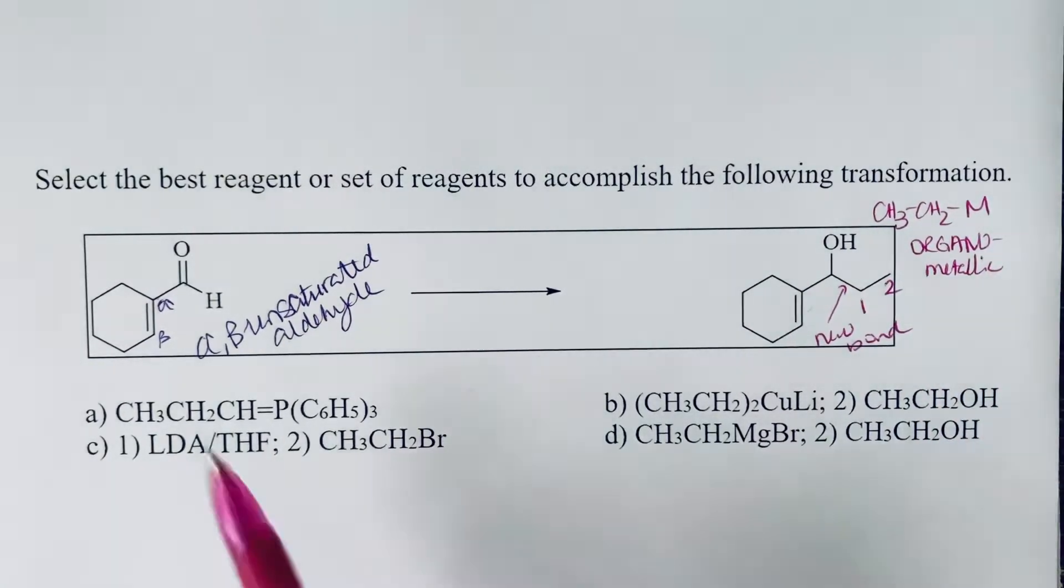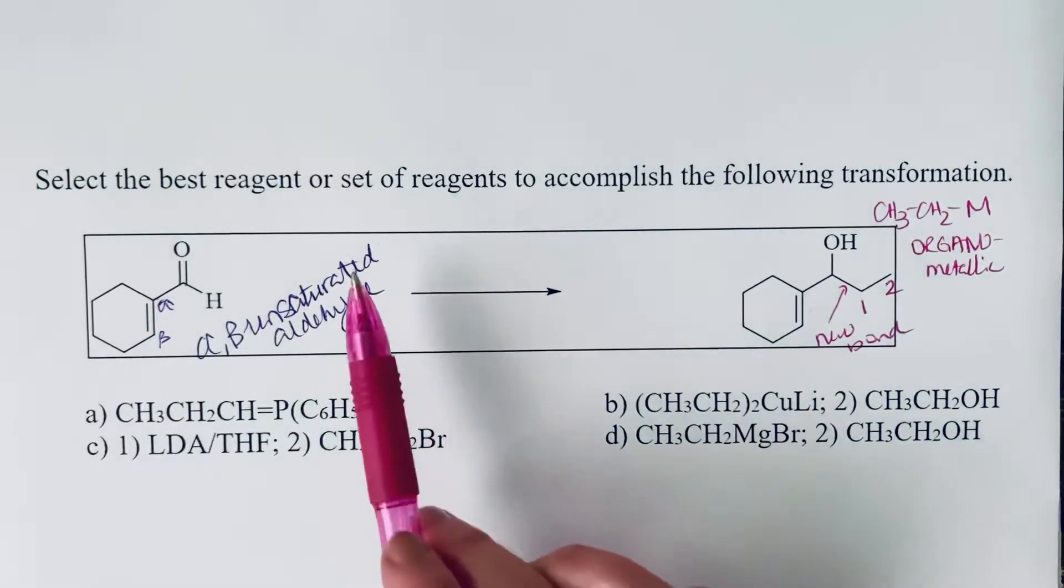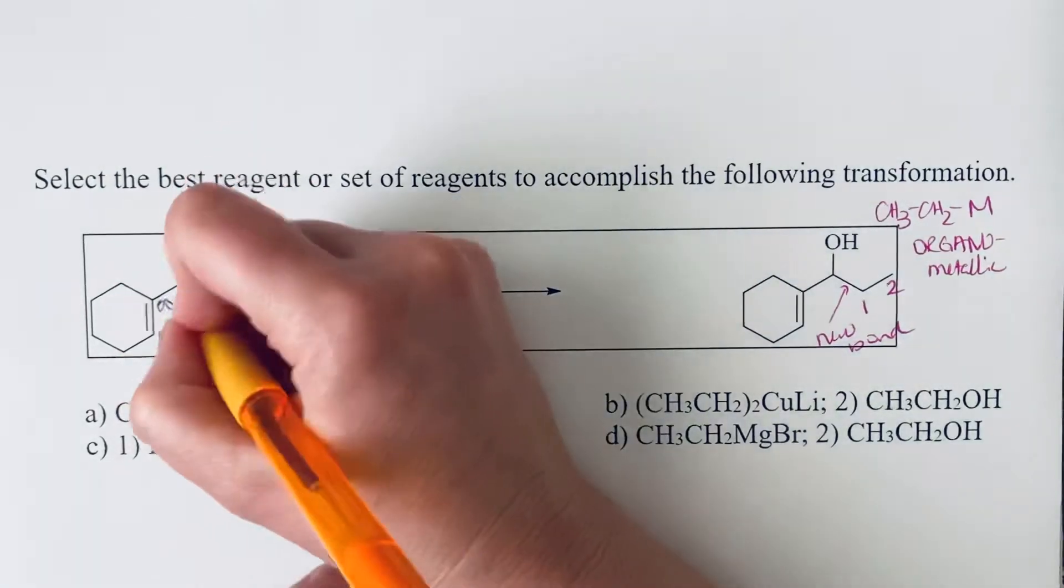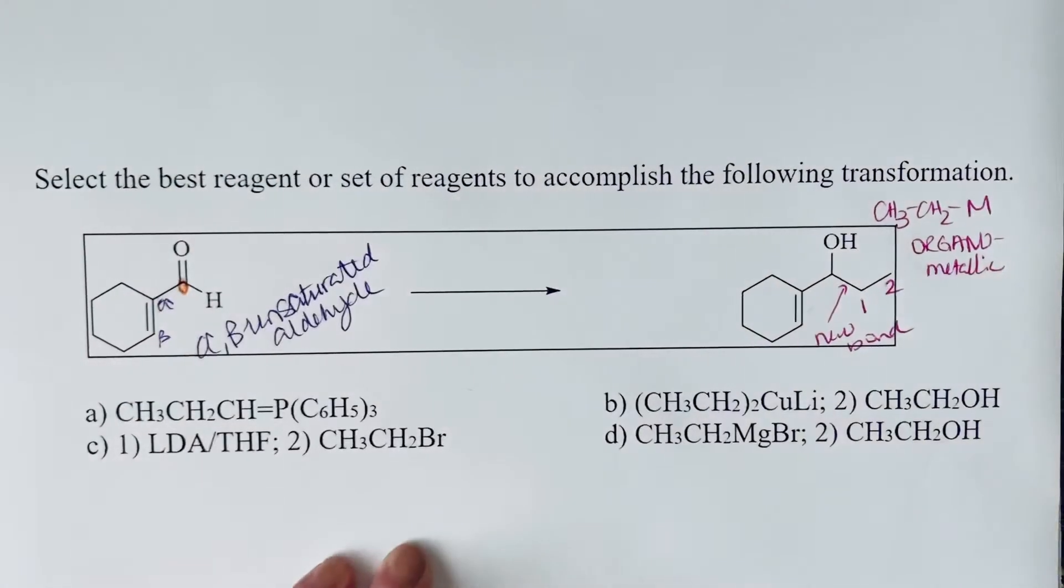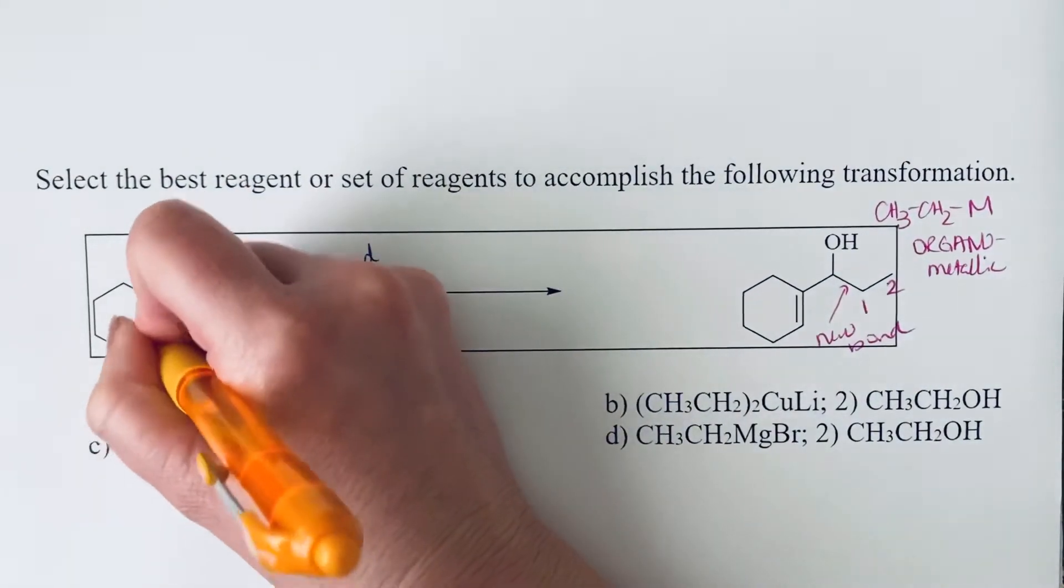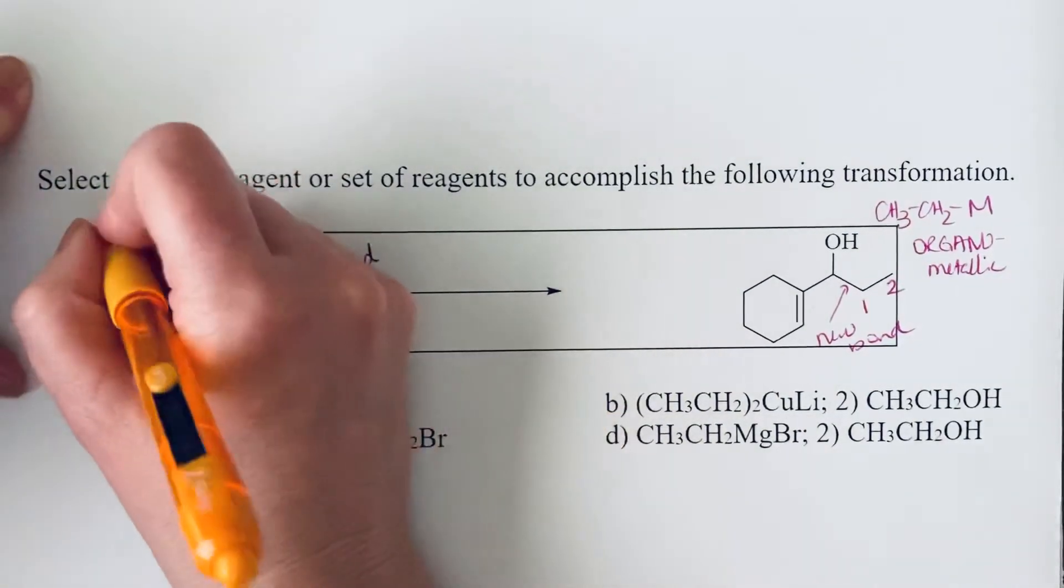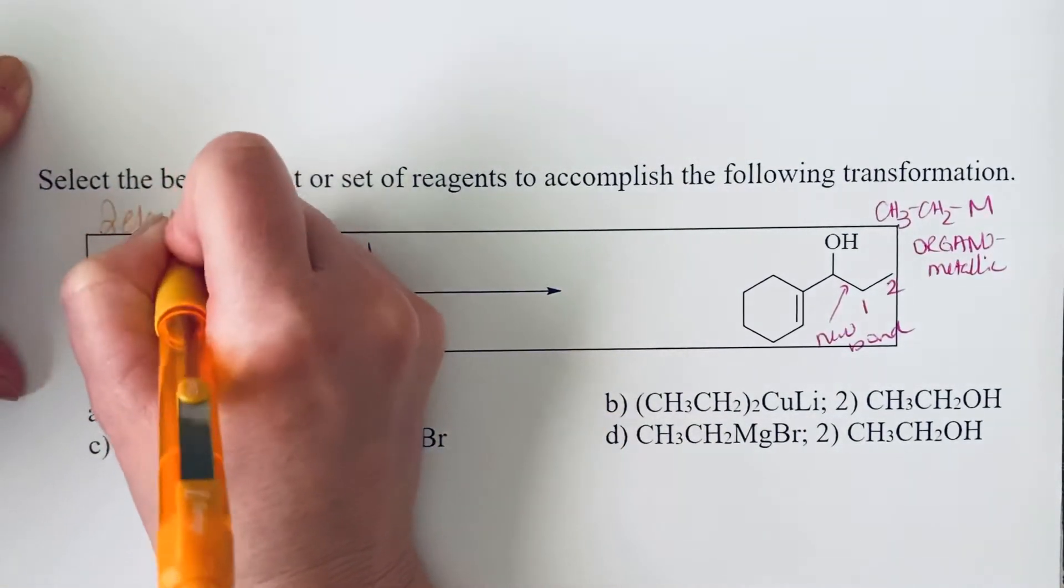And we want one that's going to add to the aldehyde carbon specifically. So when we have an alpha-beta unsaturated system, we have two electrophilic sites. So the carbonyl carbon is electrophilic and the beta carbon is electrophilic. So we have two electrophilic sites.